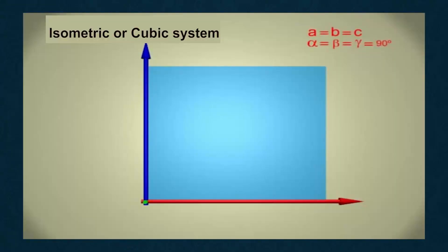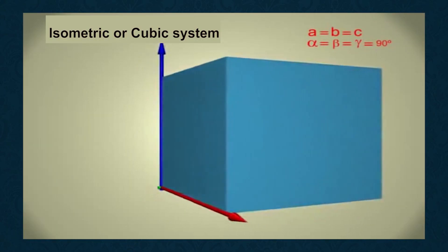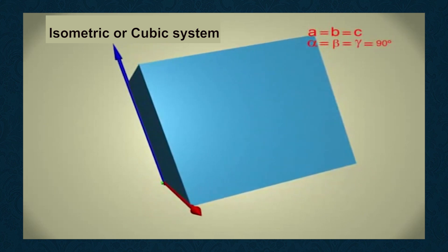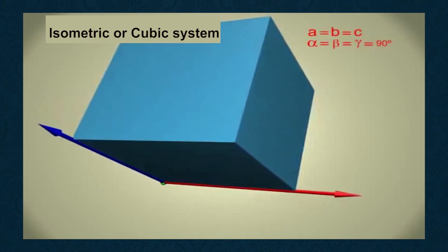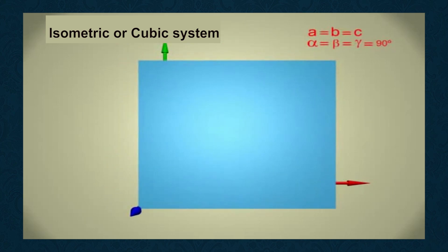First, isometric or cubic system: Three equal axes A1, A2, and A3, all at right angles to each other. That is, A1 = A2 = A3, all axes at 90 degrees to each other.